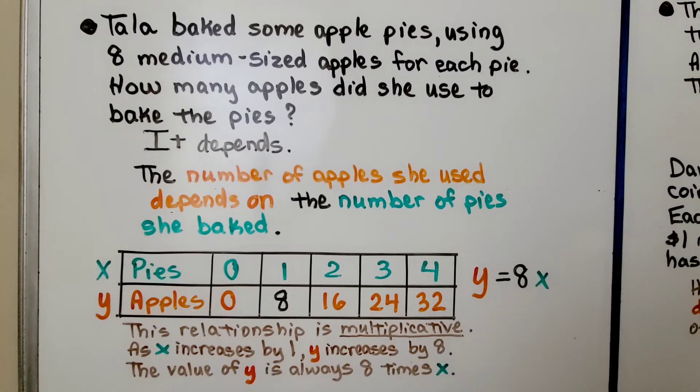Tala baked some apple pies using 8 medium-sized apples for each pie. How many apples did she use to bake the pies? It depends. The number of apples she used depends on the number of pies she baked. If we know how many pies she baked, then we'll know the number of apples she used.